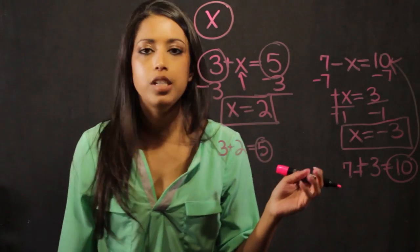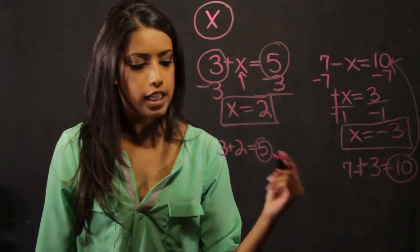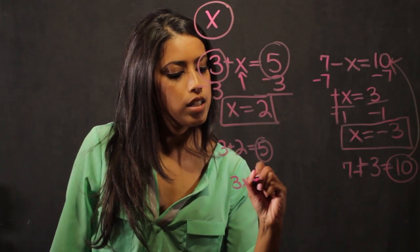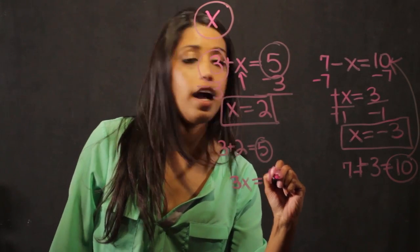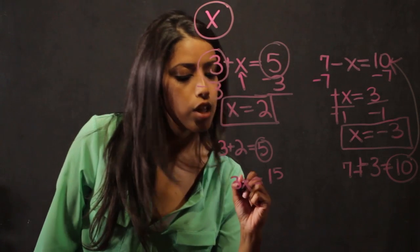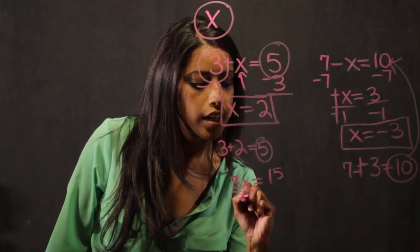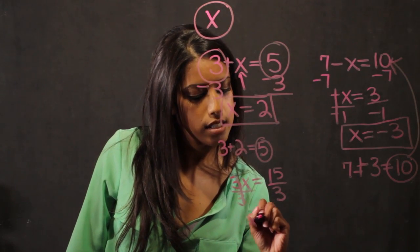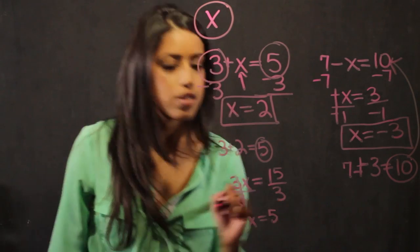Another two-step equation is one that involves multiplication. So if we had 3 times x is equal to 15, and I want to isolate x on its own, I divide here by 3, divide by 3, and I get x is equal to 5.